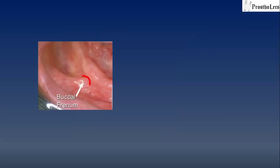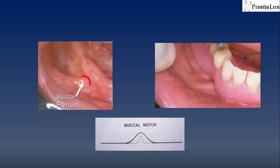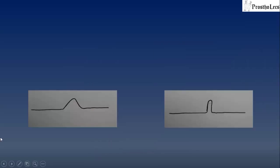In this picture we see the buccal frenum. The notch made in the denture in this area should be wide and V-shaped to allow for the activity of the muscle attached at the frenum — it should not be narrow and U-shaped in this area.